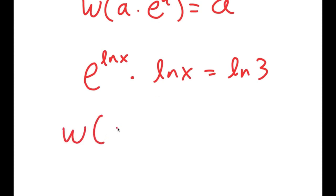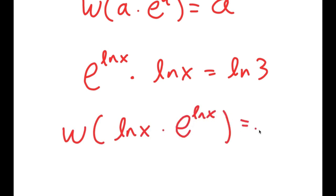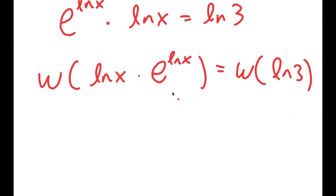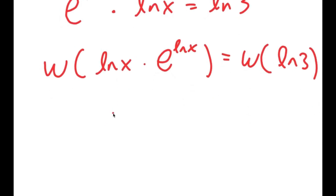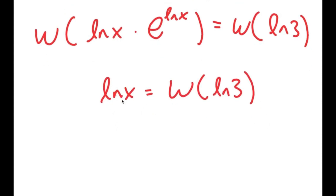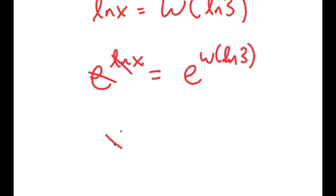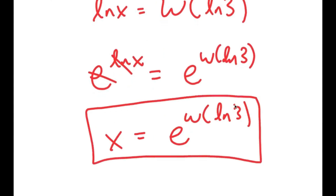Taking the Lambert W function on both sides, I get W of ln x times e to the power of ln x equals W of ln 3. The left side simplifies to just ln x, so ln x is equal to W of ln 3. To get rid of the ln, I take e to the power of both sides — e to the power of ln cancels — so x is equal to e to the power of W of ln 3. This is my answer.